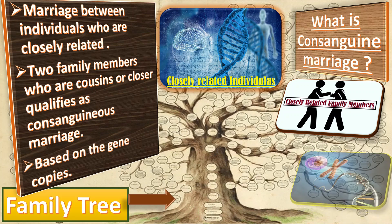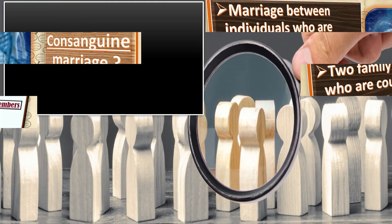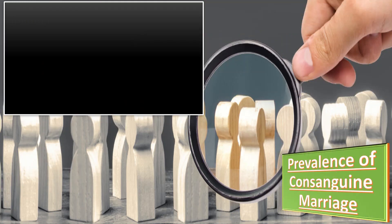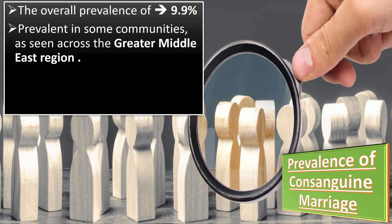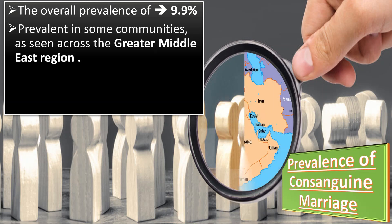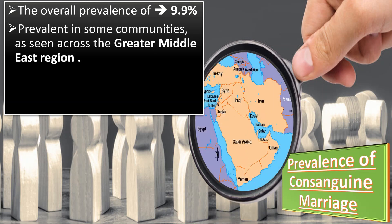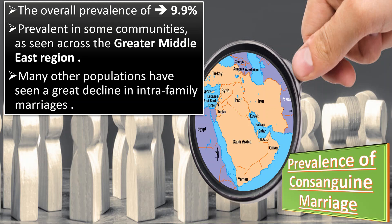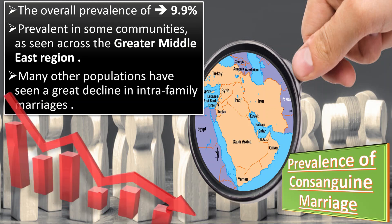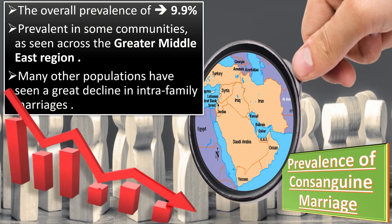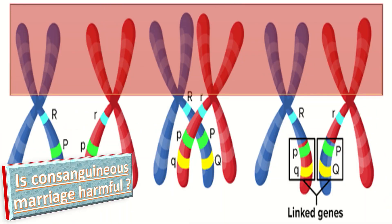What is the prevalence of consanguineous marriage? The overall prevalence of consanguineous marriage was 9.9 percent. Though these unions are still prevalent in some communities, as seen across the greater Middle East regions, many other populations have seen a greater decline in inter-family marriages.